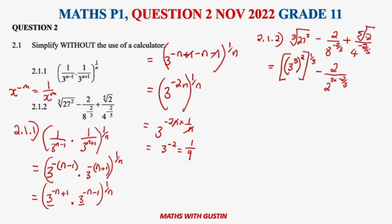The 2 in the numerator can be written as 2 to the power of 1 over 5 because of the fifth root sitting there. And 4 in the denominator can be written as 2 to the power of 2, multiplied by negative 2 over 5. Make sure what you are writing is correct — no need to rush. If you take your time and do it right, you get full marks.